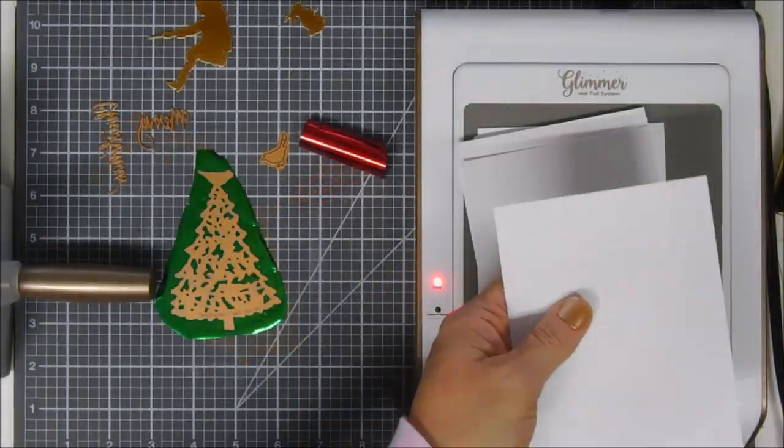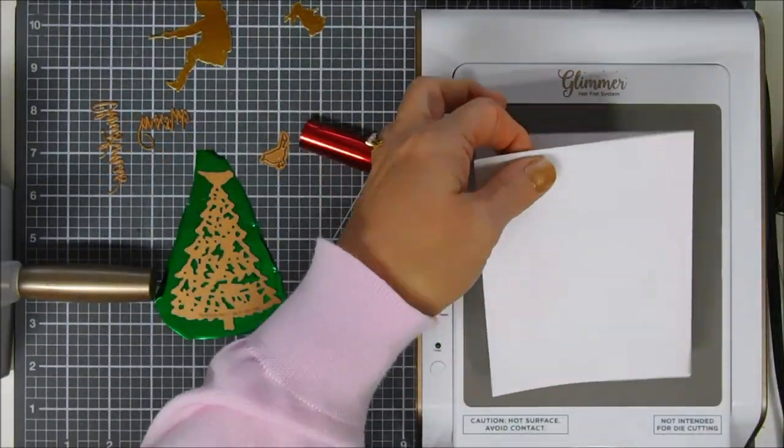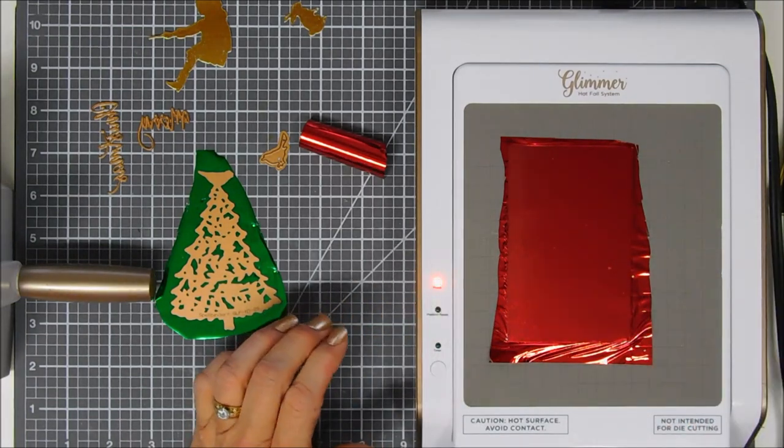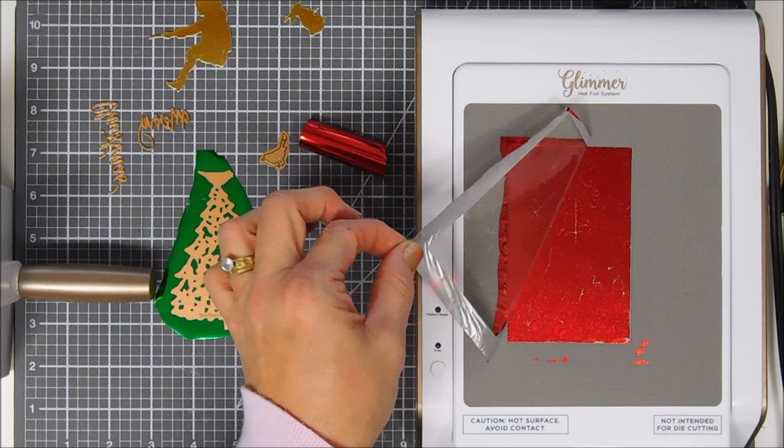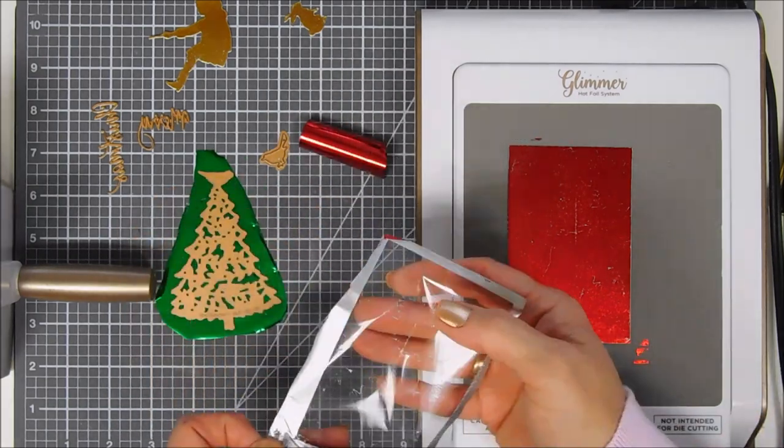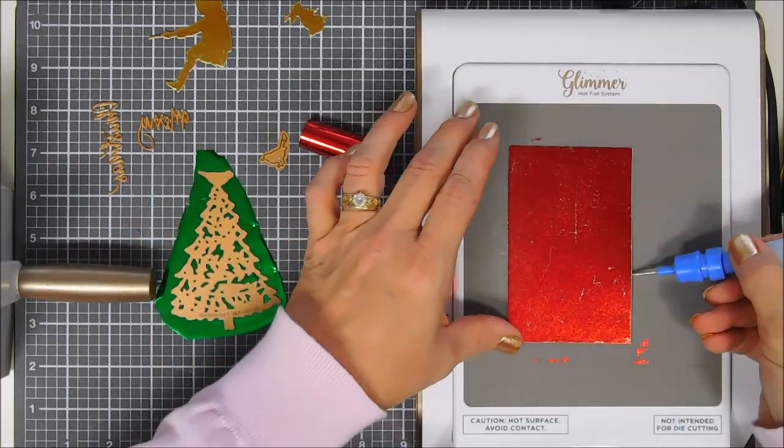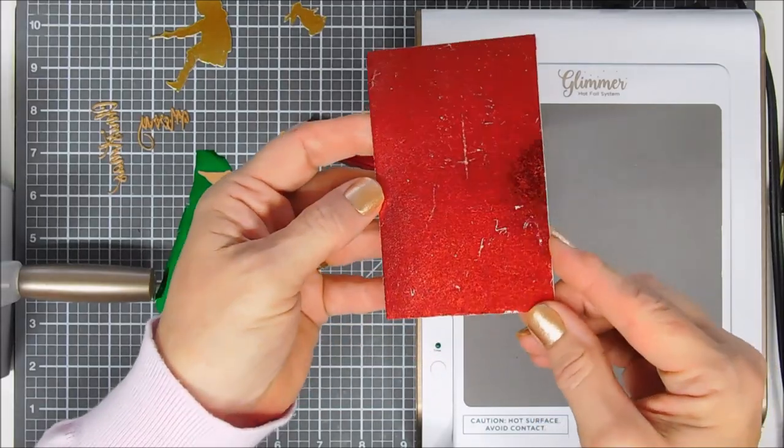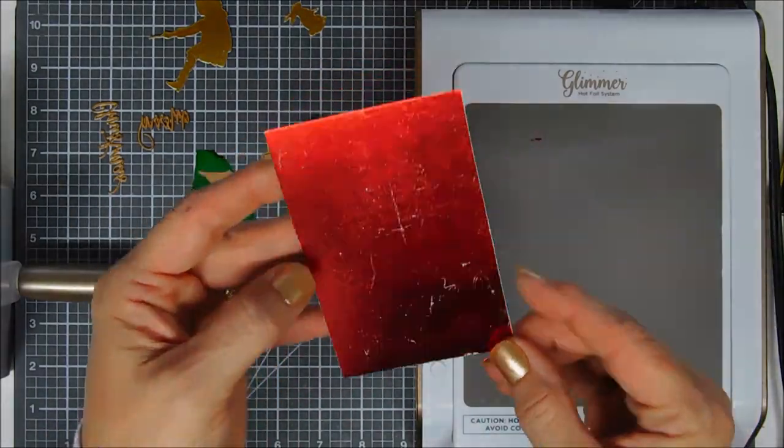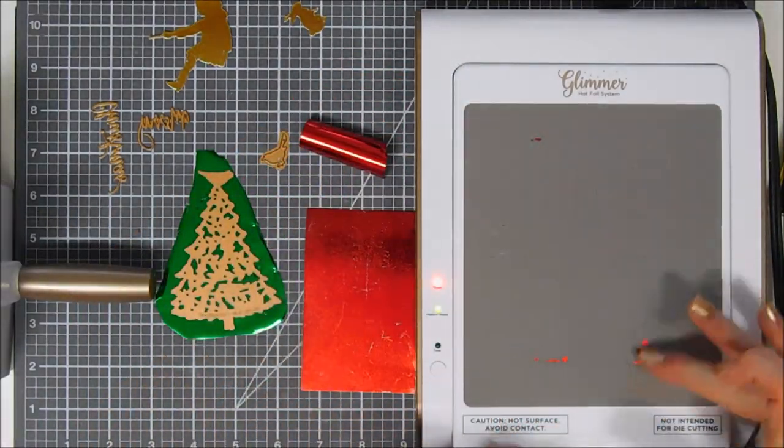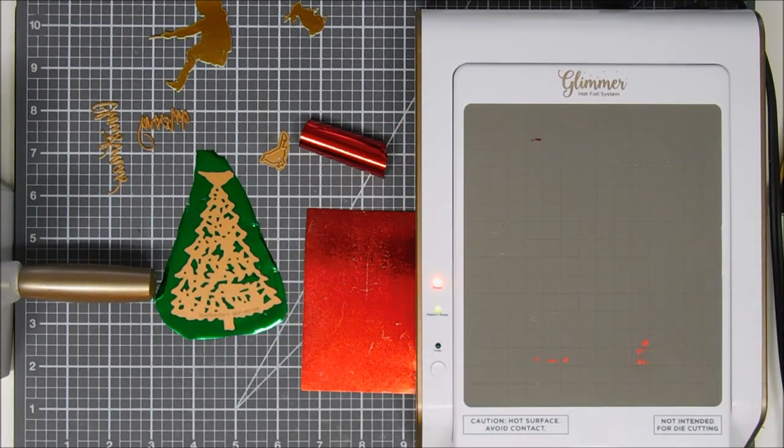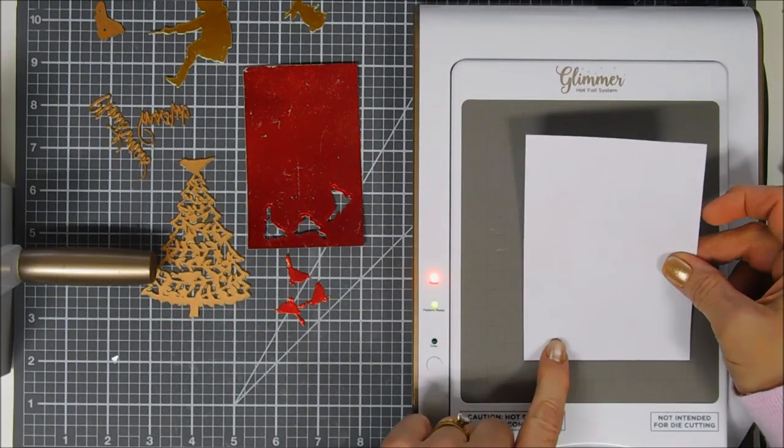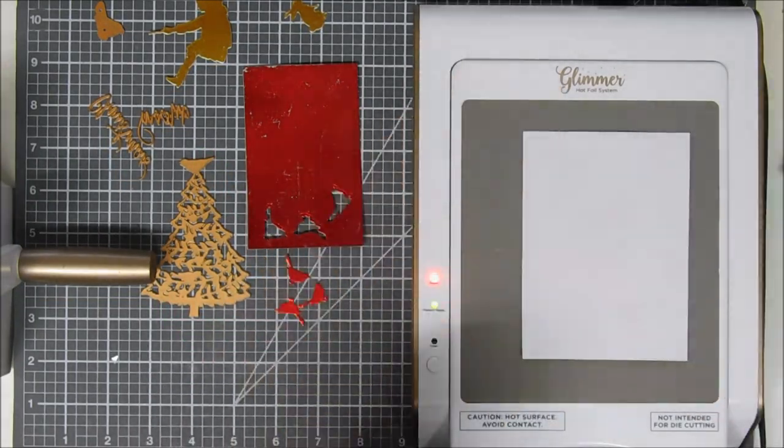I ran this through my die cutting machine and this little piece here kind of stuck to the top of my glimmer base, but no worries, it came off beautifully. You can see all the scratches in here. I don't know if it was my foil or the cardstock or the shims that caused that, but I'm going to use the red for cardinals which I die cut out. I kind of went around my little scratches.